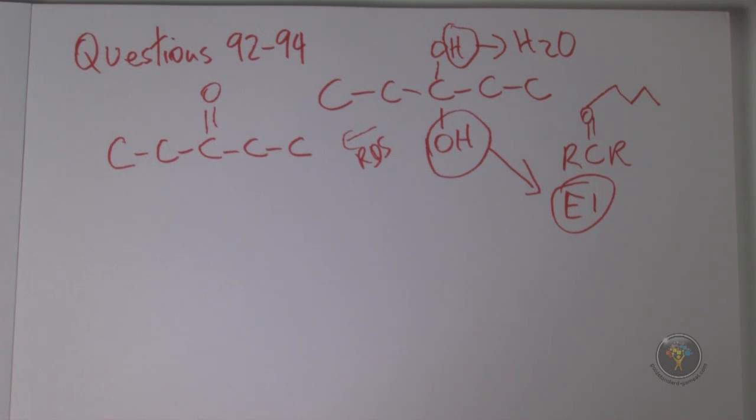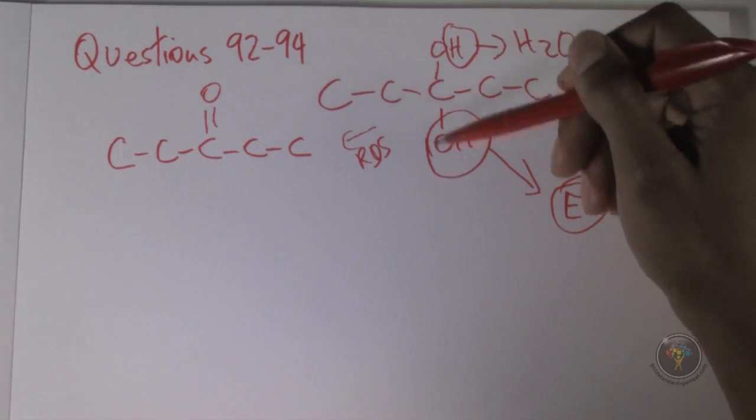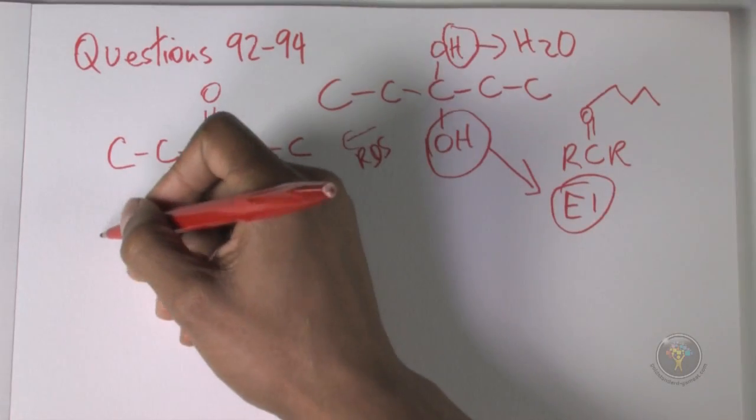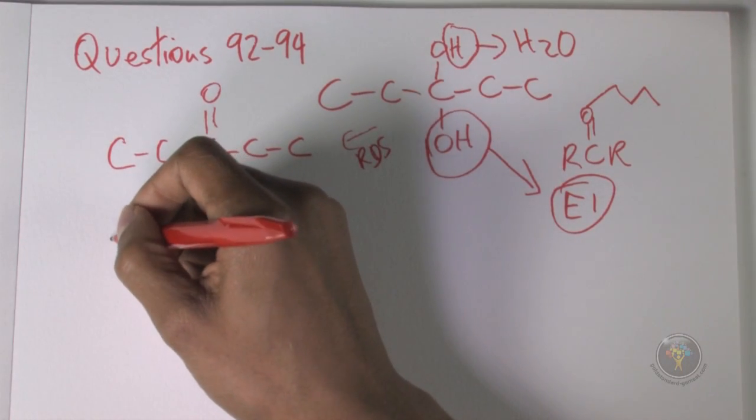Question 93: Consider the alkyl diols and dichloroalkanes. Compared with the number of constitutional isomers of the diols, diols means two alcohol groups, two OH groups on the compound, the number of constitutional isomers of dichloroalkanes is...